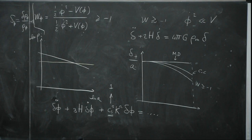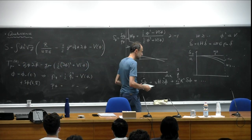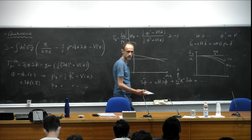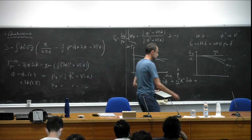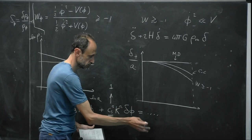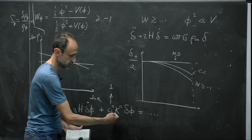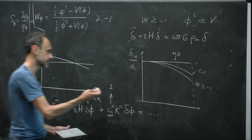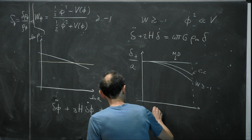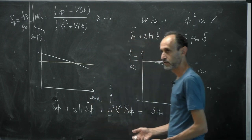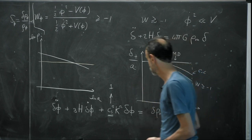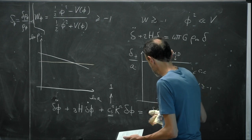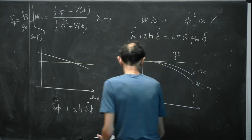There are two cases where perturbations could grow: one is when there are no pressure gradients, so c_s is much smaller than one; the other is when there is a gravitational source with large gradients, or a direct coupling with matter. In those cases the perturbations of the dark energy component would grow, but then you are talking about modified gravity rather than quintessence.